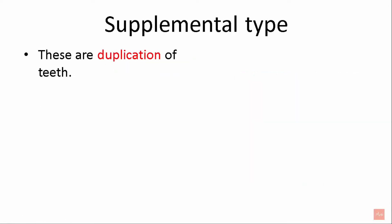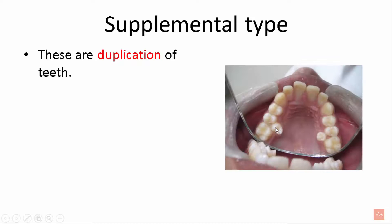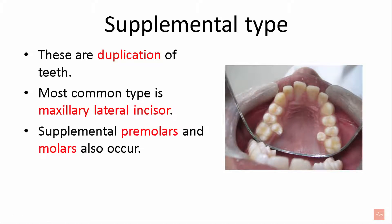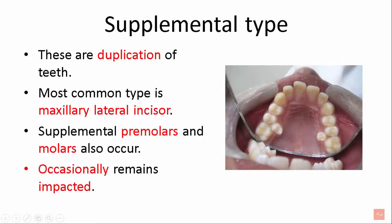Next is the supplemental type. These are duplications of teeth. As you can see in this picture, they exactly look like the permanent teeth — the shape and anatomical features are the same. The most common type is the maxillary lateral incisor. Supplemental premolars and molars are also seen. They occasionally remain impacted.